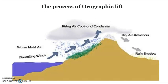Now I introduce the process of orographic lifting. This lift occurs when an air mass is forced from a lower elevation to a higher elevation as it moves over rising terrain. As the air mass gains altitude, it quickly cools down. We can raise the relative humidity to 100% and create, under the right conditions, precipitation.